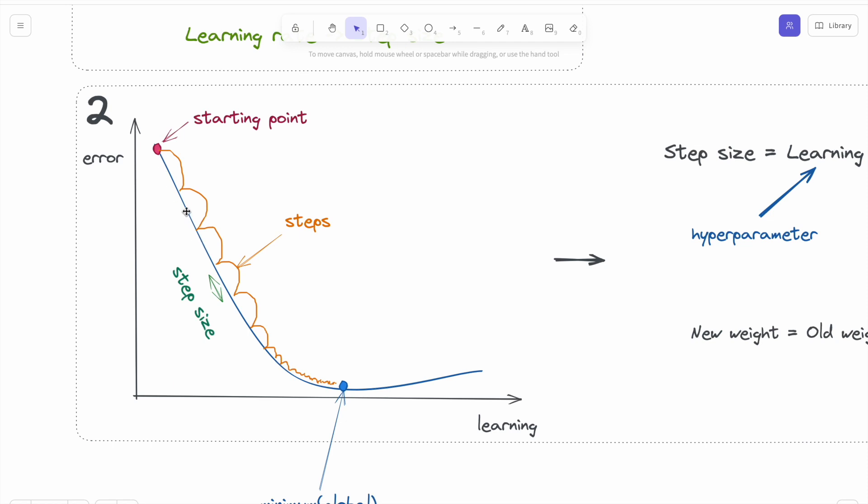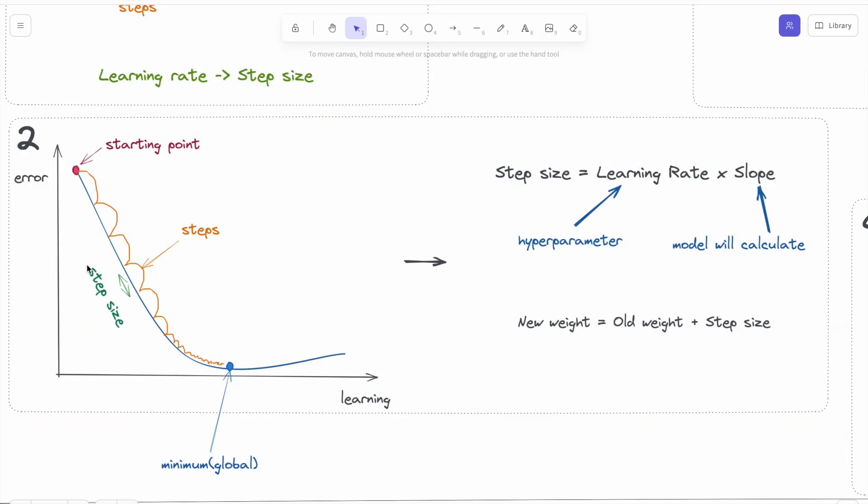The step size equals learning rate times slope. Learning rate is a hyperparameter for the model, so we will determine the different values for the learning rate. The slope is not a hyperparameter; the model will calculate this slope.